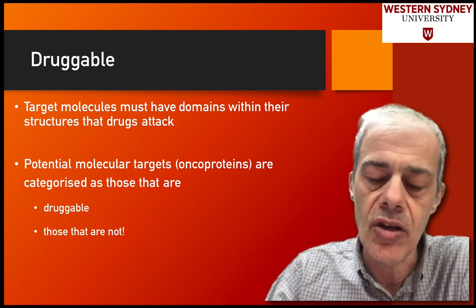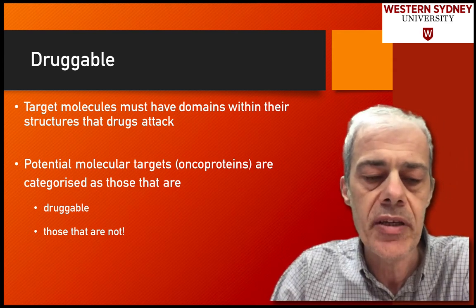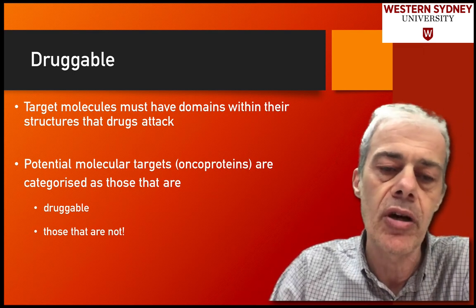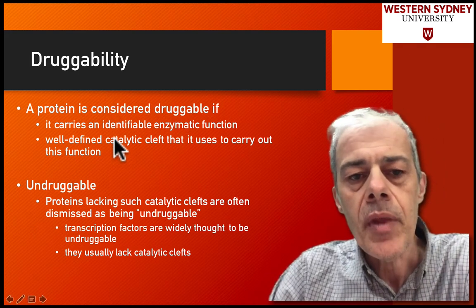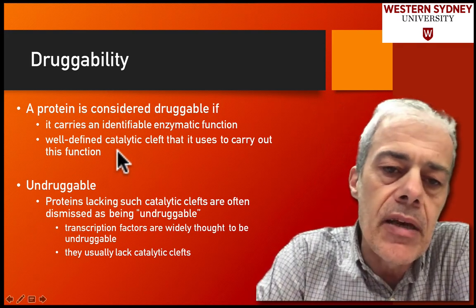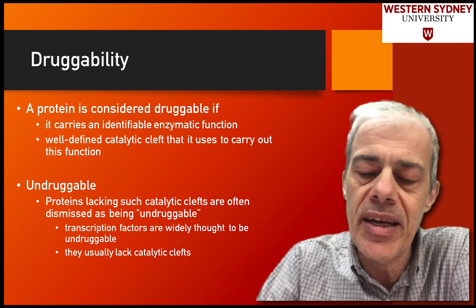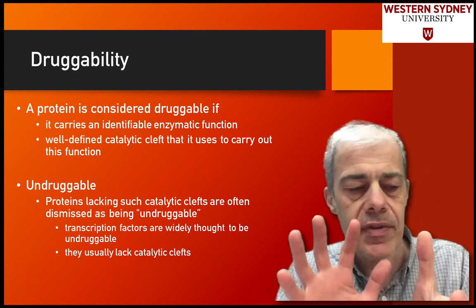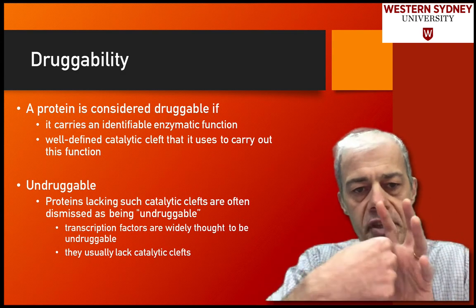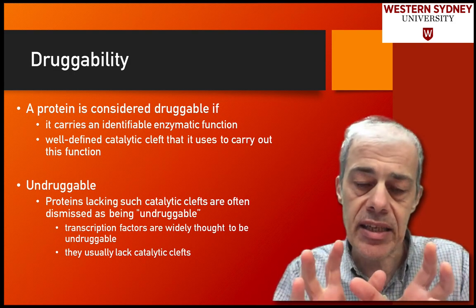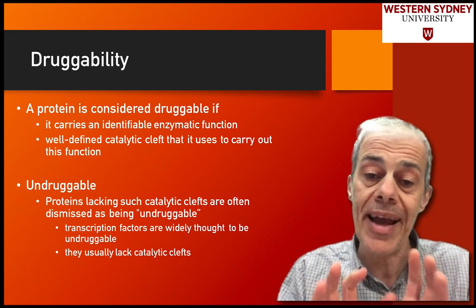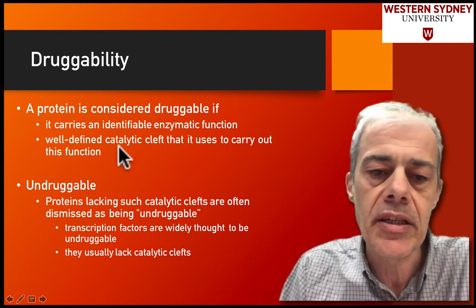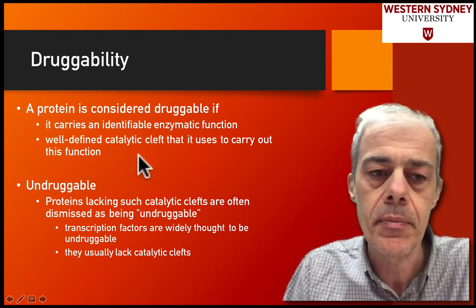So what are the properties of the protein? Is the protein druggable? We know it's a target, but can we actually design a drug for it? A protein is considered druggable if it contains an identifiable enzymatic function. Enzymatic sites are these small clefts in the protein where something comes in and binds. If the protein has an identifiable enzymatic function, then it's quite likely it has what's called a catalytic cleft, and you can target that pocket.